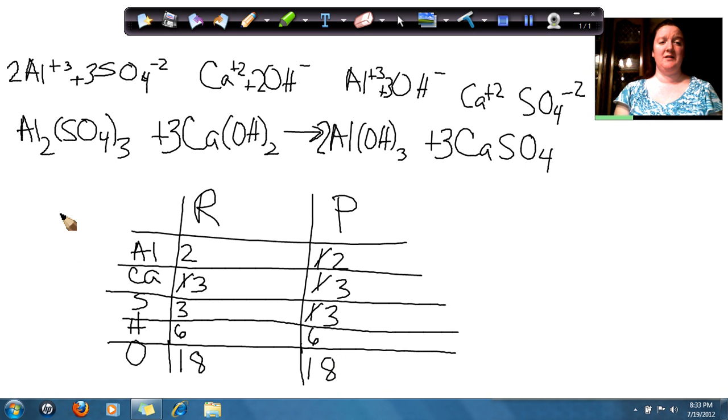So now I have it balanced with 1 Aluminum Sulfate plus 3 Calcium Hydroxide. It gives us 2 Aluminum Hydroxide plus 3 Calcium Sulfate. Have a great day.